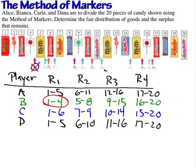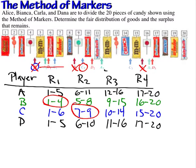Now that player B has gotten a fair share, player B is out of the game, so we remove all of player B's markers. Since round 1 is done, we cross out all round 1 bids. Moving to round 2, we look for the first marker with a subscript of 2. C2 wins the second fair share — that's Carla. We look at Carla's round 2 fair share: Carla gets items 7 through 9.